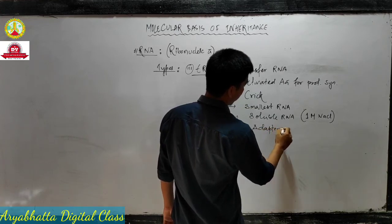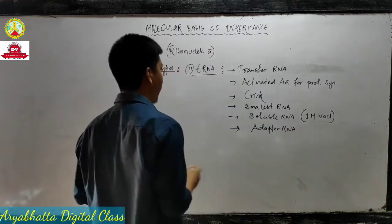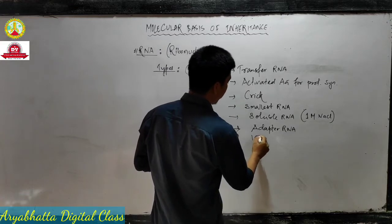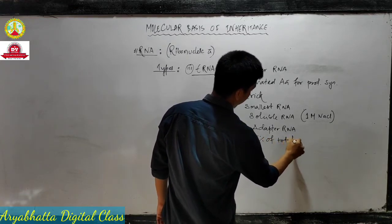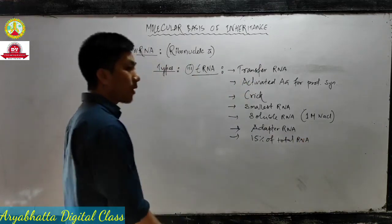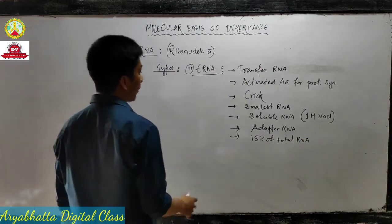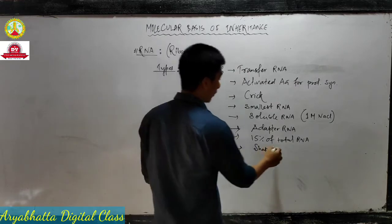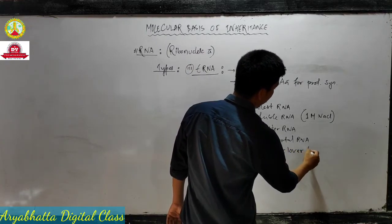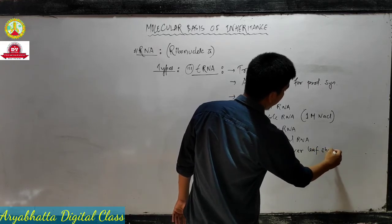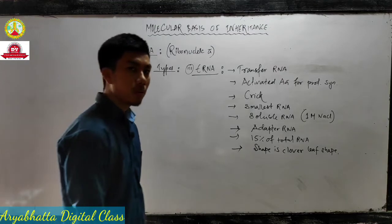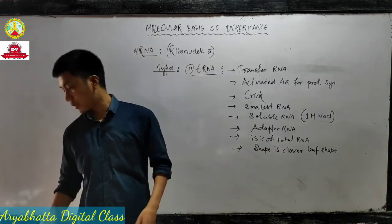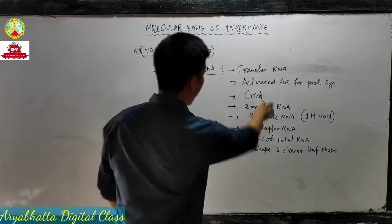tRNA is also called adapter RNA - remember that name. It constitutes about 15% of total RNA. The shape of tRNA is clover leaf shape - like a clover leaf. We need to see the structure and diagram of tRNA.